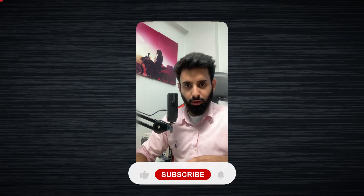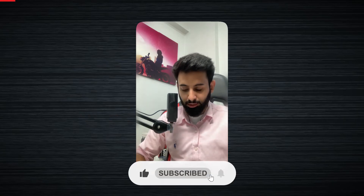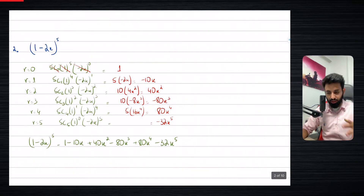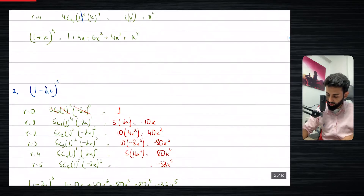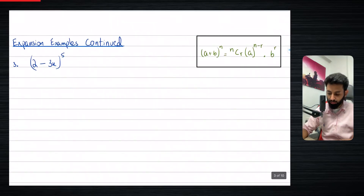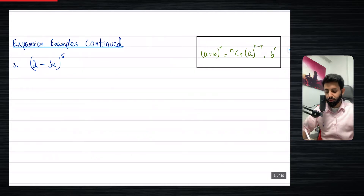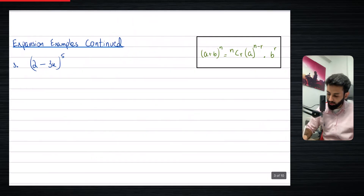Hi, so in this video we are going to be solving some more complex examples of expansions of the binomial theorem. In the last video, we did some very basic examples. You must have noticed that the first term in both the expansions that we did was one. In this, as you can see, the first term is not one. So let's see what happens when the first term is two or something other than one.